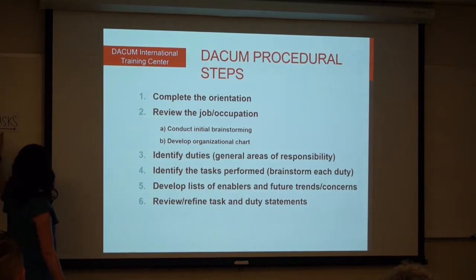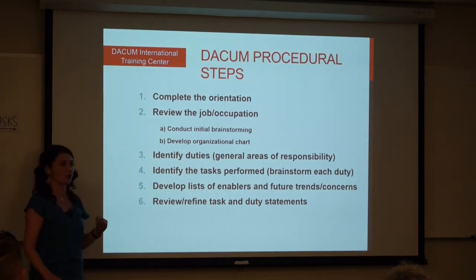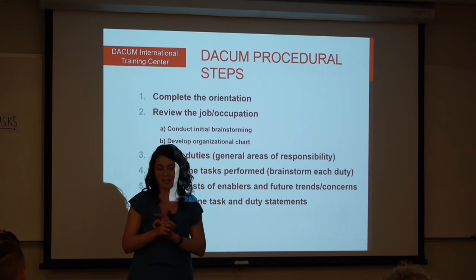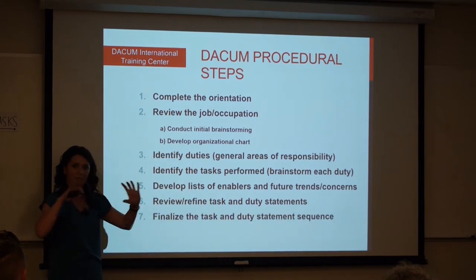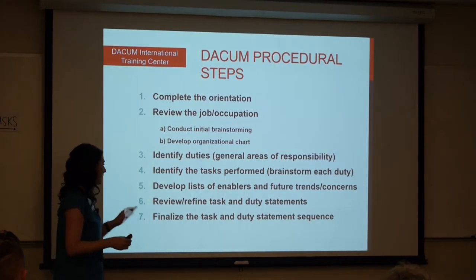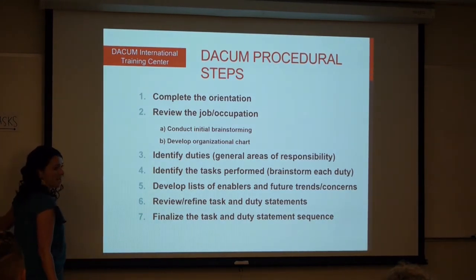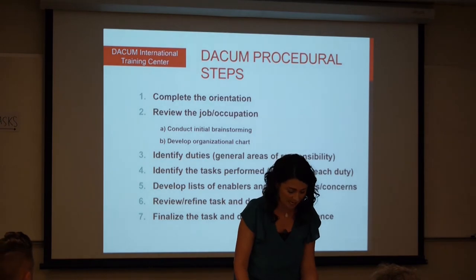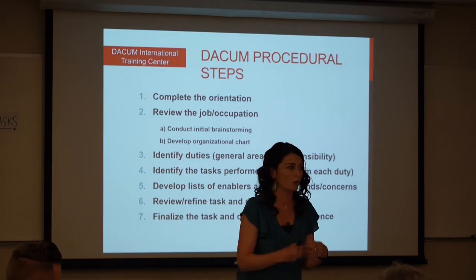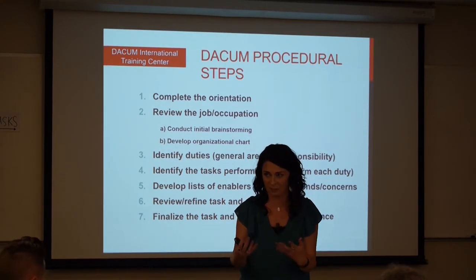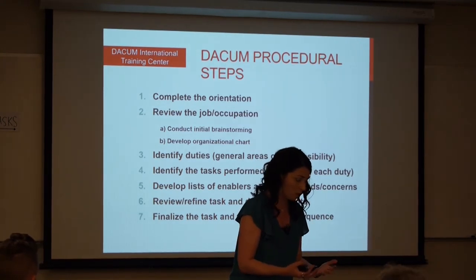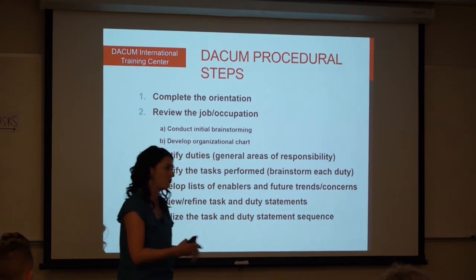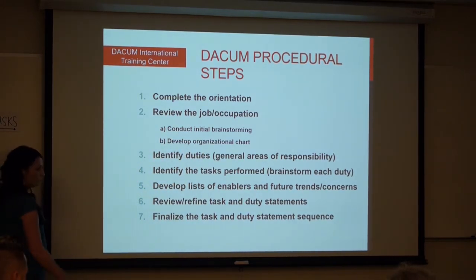We'll look at each duty statement and its associated tasks and make sure that they're accurate, they're clear, nothing's missing — we don't need to add or edit or tweak them at all. And we'll make sure that they're in an order that is a logical workflow if necessary. Then we'll finalize the sequence of the duties, A through whatever it winds up being for the chart. In the case of Caterpillar, they arranged their duty statements A through H in the order of importance to their work. They decided that maintaining customer satisfaction is the most crucial part of their work because without the customer, none of this other stuff really happens. So you may have a different way of organizing or prioritizing or sequencing — we'll figure it out and get them sequenced A through whatever.